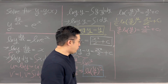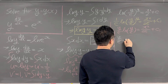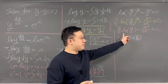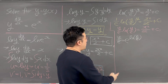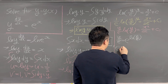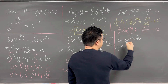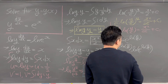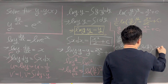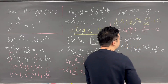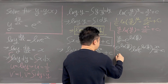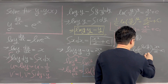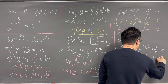Now, y/e can be rewritten as e to the power of ln(y/e). Using this, the left-hand side becomes e^(ln(y/e)) times ln(e^(ln(y/e))), which is in the form required for the Lambert W function. So ln(y/e) equals the Lambert W of (x²/(2e) plus c1).